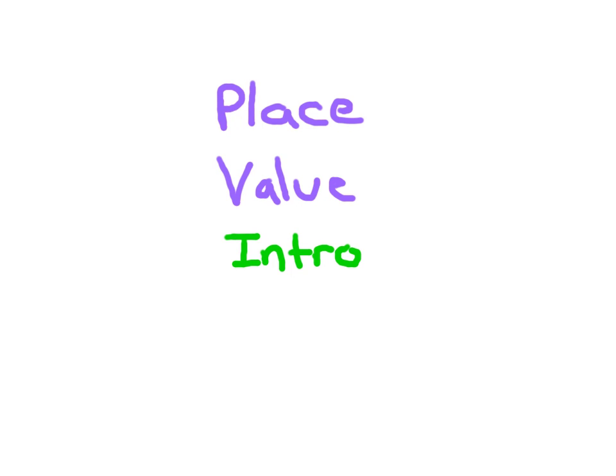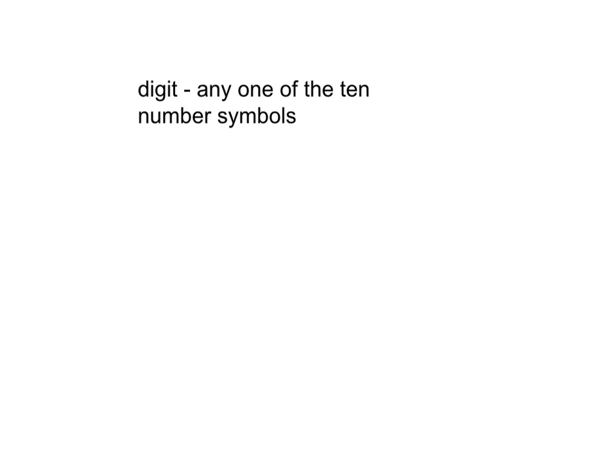Place value introduction. Here's a definition. A digit is any one of the ten number symbols: 0, 1, 2, 3, 4, 5, 6, 7, 8, and 9. Those are the ten number symbols.